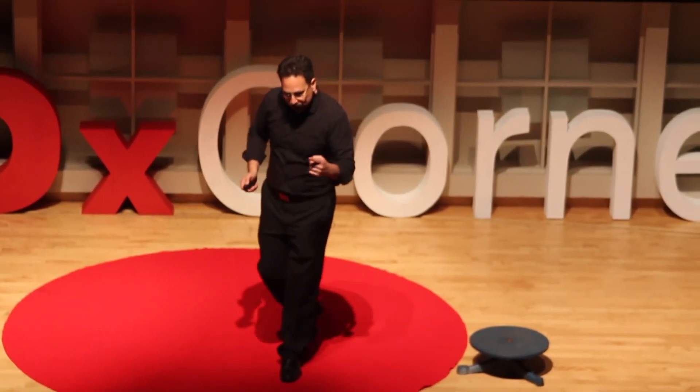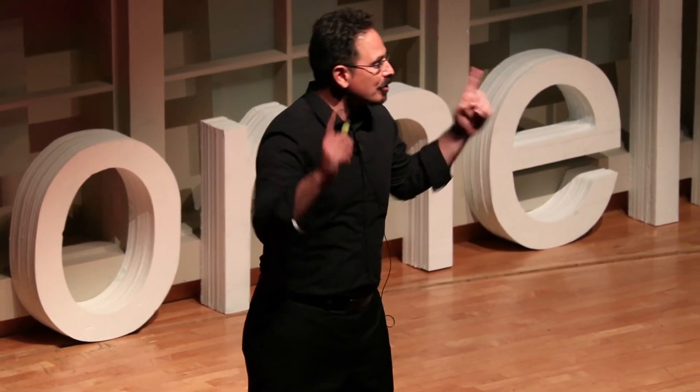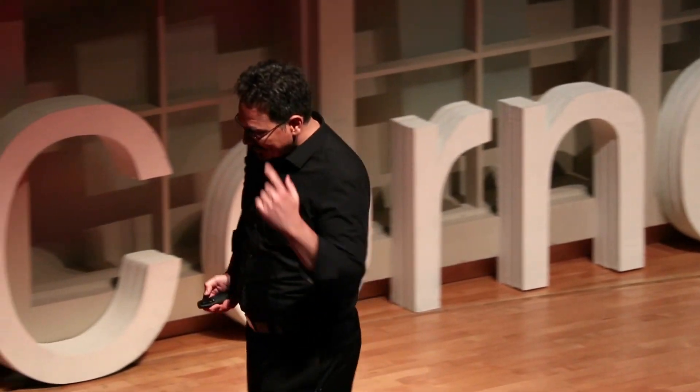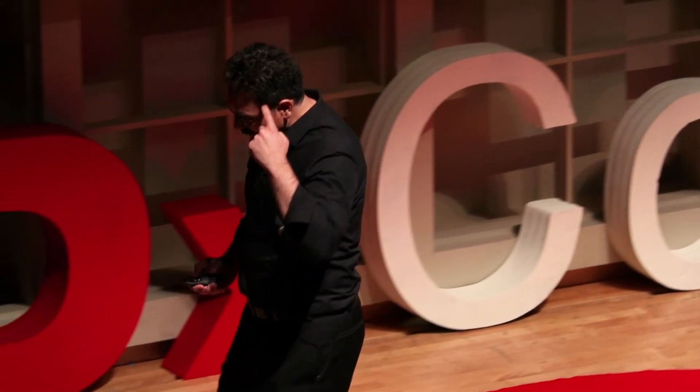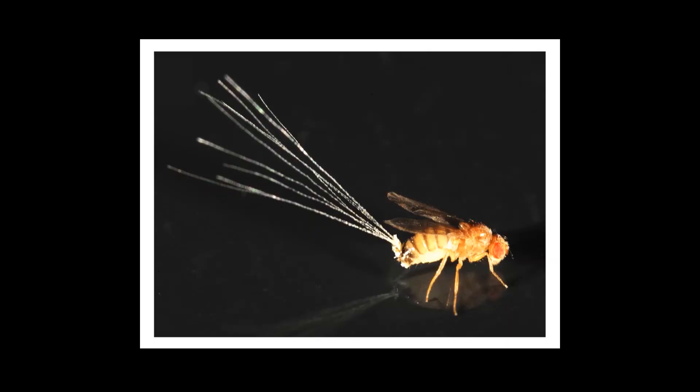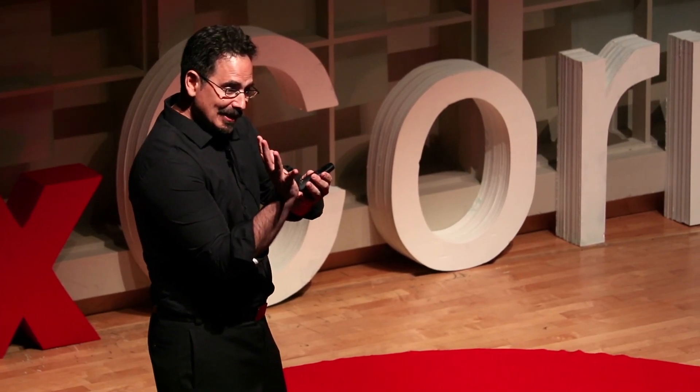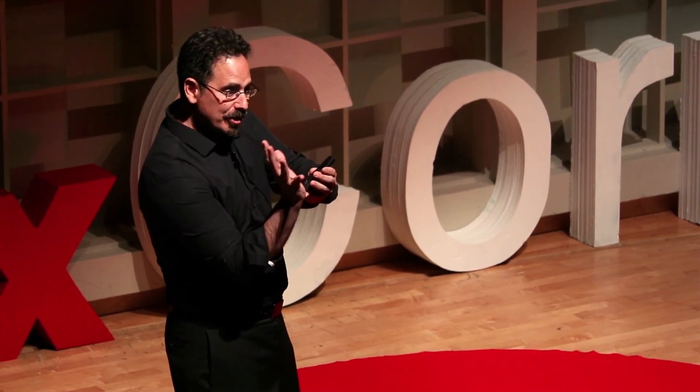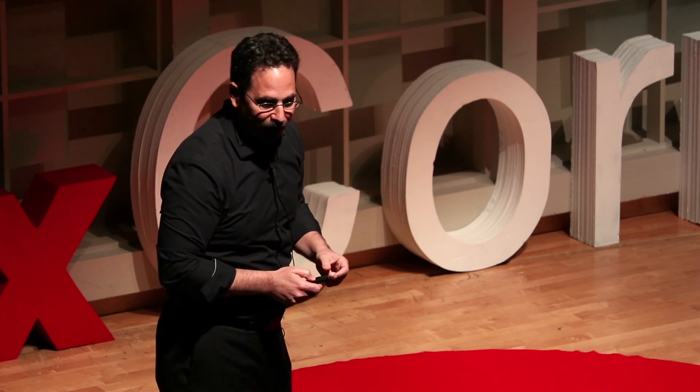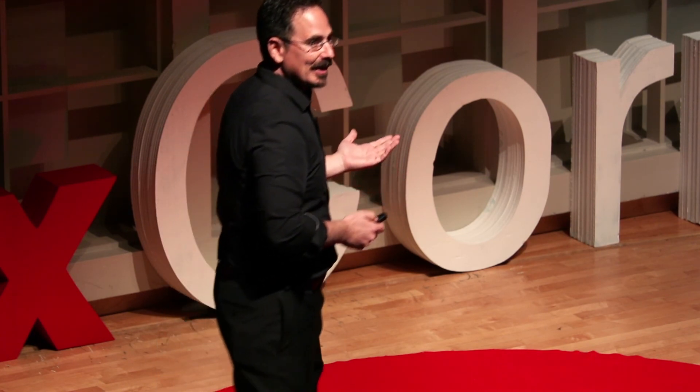But if we somehow slowed the process down, maybe we could get some other organ to be able to tell what's going on. How do you do that? You take a dandelion seed, you crush it, you take some fibers from that seed, and you glue it to the butt of the fly. The idea is that these feathers will slow the rotation down enough that some other organ will be able to tell what's going on. Does this work? It does.